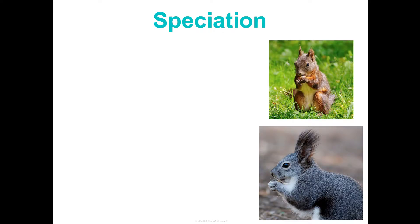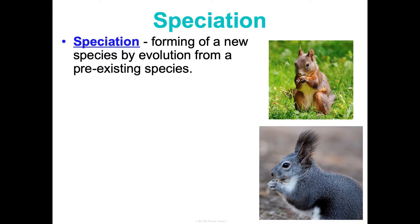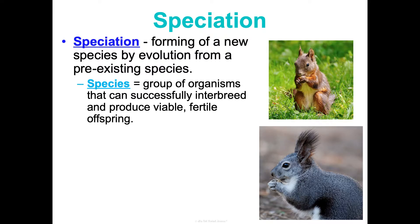One pattern we see in evolution over time is speciation — the forming of a new species by evolution from a pre-existing species. First, we need to understand what a species is. According to the biological species concept, a species is defined as a group of organisms that can successfully interbreed and produce viable, fertile offspring — meaning offspring that can not only survive, but also reproduce and pass on their traits.